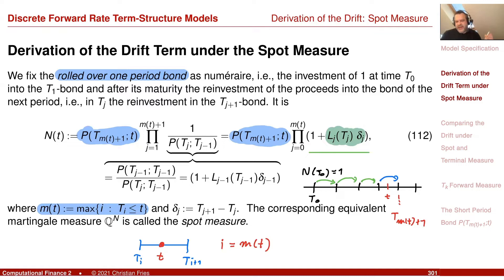On the other hand, the terminal measure has a nice property: the last forward rate is a martingale. Under the spot measure, no forward rate is a martingale because we are continuously shifting the zero-coupon bond. The spot measure therefore has a disadvantage compared to the terminal measure, and which is better may depend on the application and numerical properties.